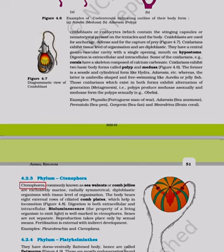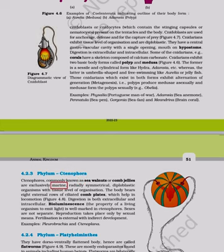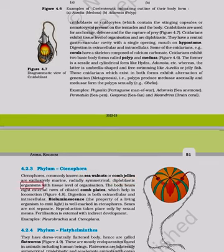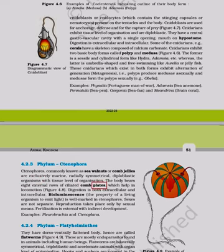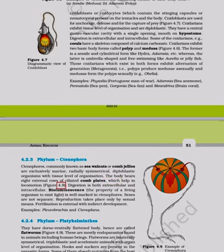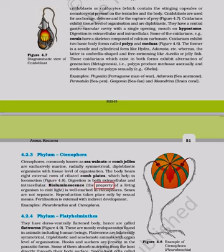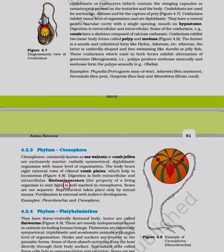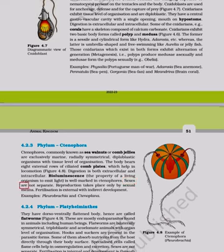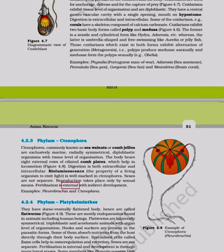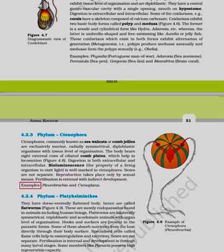Phylum Ctenophora: Commonly known as sea walnuts or comb jellies, exclusively marine, radially symmetrical, diploblastic organisms with tissue level of organization. The body bears eight external rows of ciliated comb plates that help in locomotion. Digestion is both extracellular and intracellular. Bioluminescence is well marked in ctenophores. Sexes are not separate; reproduction is only by sexual means with external fertilization and indirect development. Examples: Pleurobrachia and Ctenoplana.